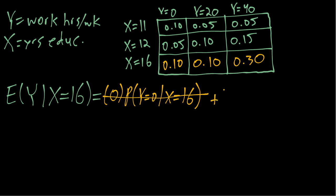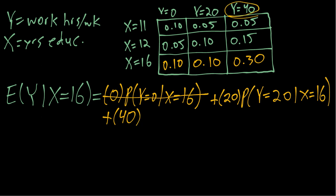And then the next possible value of Y is 20. So we'll have 20 times the probability that Y equals 20. We want the conditional probability that Y equals 20 given X equals 16. And finally, plus 40, which is that last possible value of Y, times the conditional probability that Y is 40.